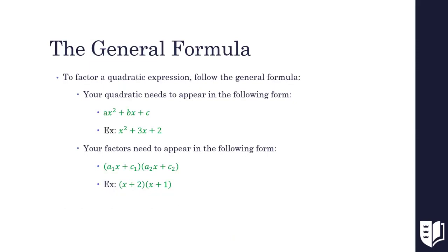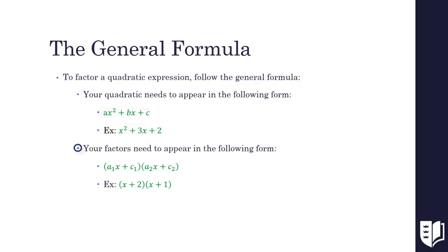In order to factor a variety of quadratic expressions, we need to follow the general formula. We start by arranging our expression in the form ax squared plus bx plus c. Our example, x squared plus 3x plus 2, is arranged this way. Our factors will appear as two linear terms being multiplied. The first factor will be the first factor of ax squared added to the first factor of c. The second factor will be the second factor of ax squared added to the second factor of c. The factors of our quadratic above are x plus 2 times x plus 1.